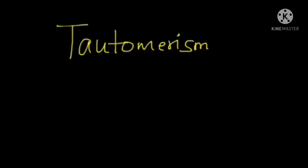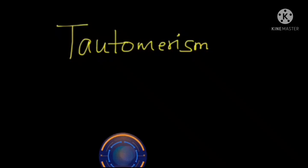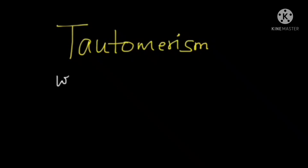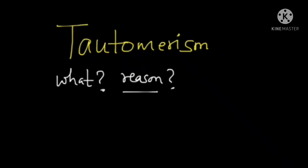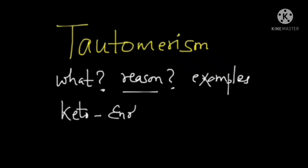Hi guys, welcome to this video. In this video we are going to talk about tautomerism. We will look at what tautomerism is, the reason behind it, some examples — specifically keto-enol tautomerism — and finally the stability between these two kinds of isomers.